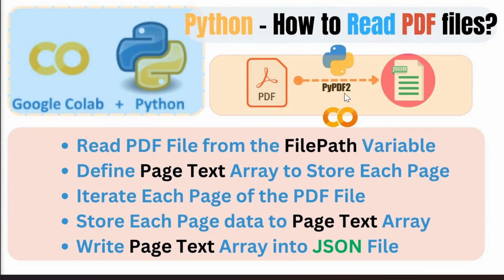We are going to use the pypdf2 library to read the PDF file, reading it page by page. First we read the PDF file from the path, then define a page_text array variable to store each page's data. We iterate each page, read it into text, and store it in the page_text list. After reading all the data, we write this array list into the JSON file.